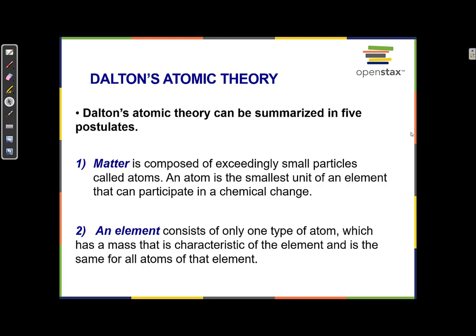In the second postulate, an element consists of only one type of atom, which has a mass that is characteristic of the element and is the same for all atoms of that element. So there's only one type of atom in an element, and all of those atoms have the same mass.